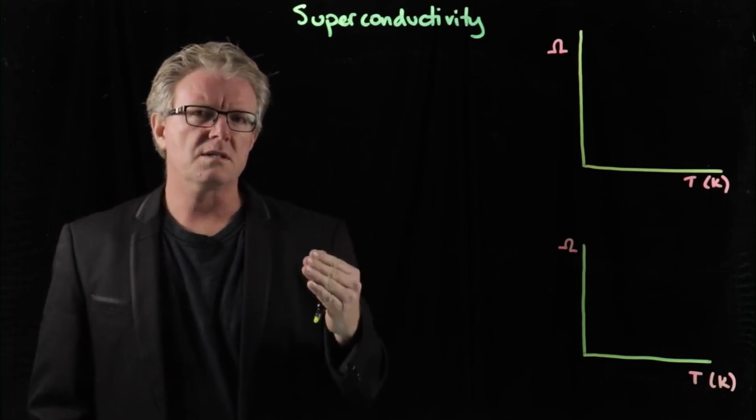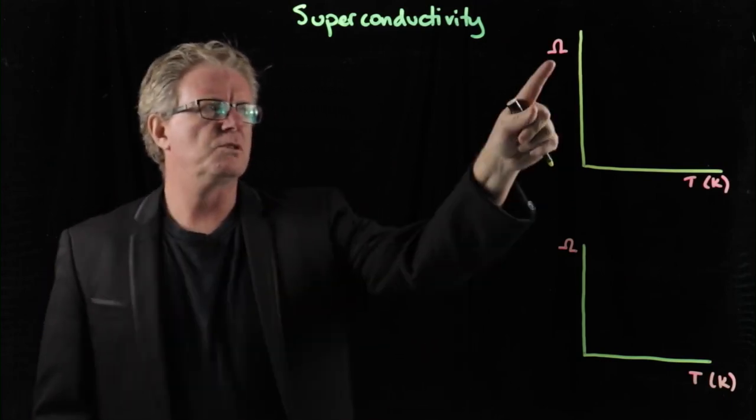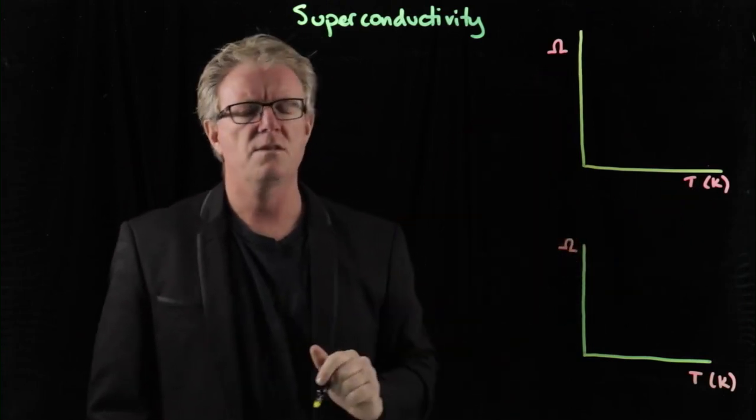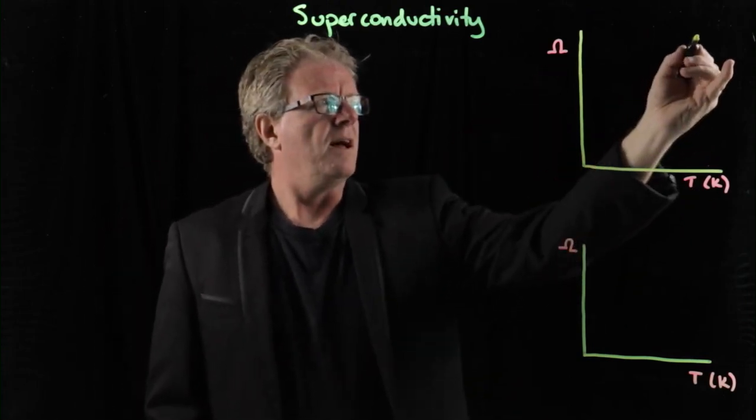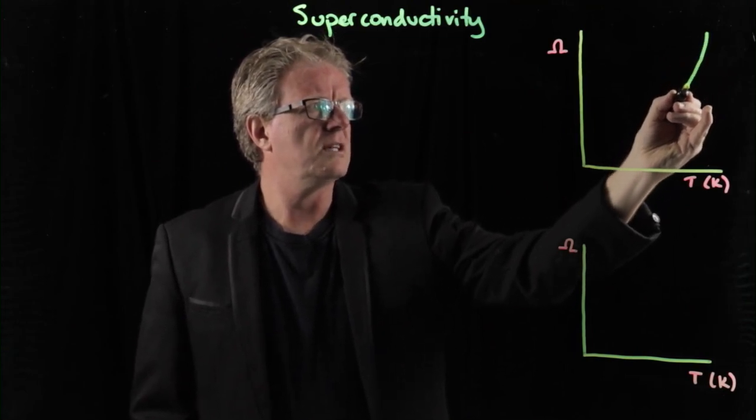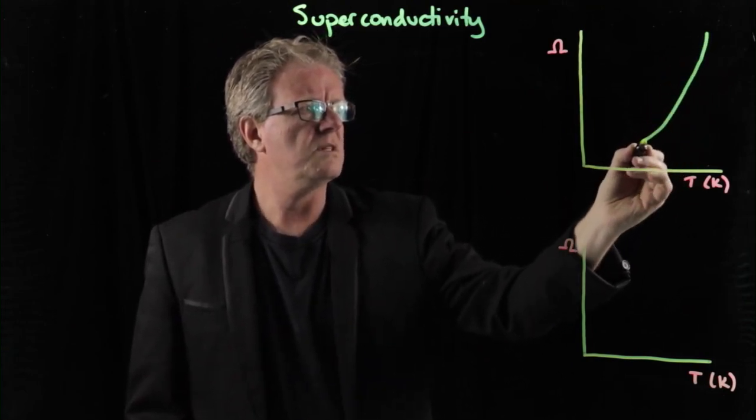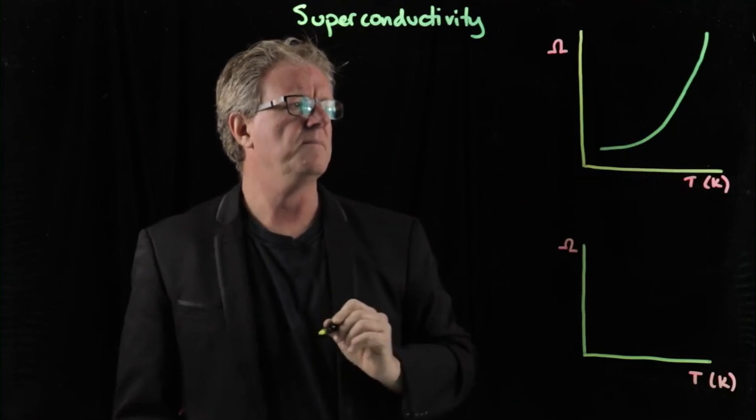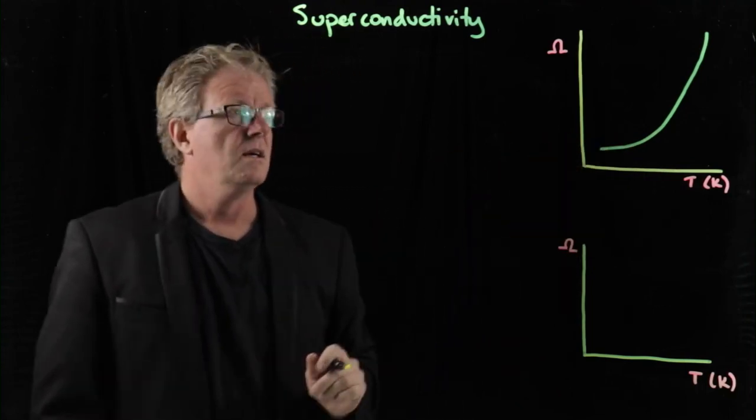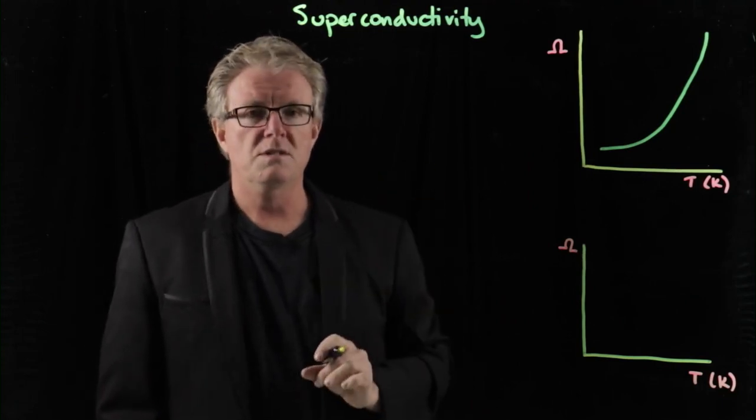Normal resistors have a relationship between resistance and temperature. Here we have temperature in Kelvins and the resistance in ohms. As the temperature decreases, metal conductors show a decrease in their resistance, and they keep going, but they never reach zero resistance. That's under normal circumstances in temperature.